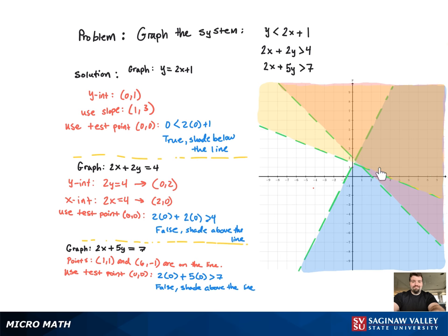And when we shade above the line, now we can see the solution region is the one that has all three shaded regions overlapping, which I'm highlighting. And there you have it.